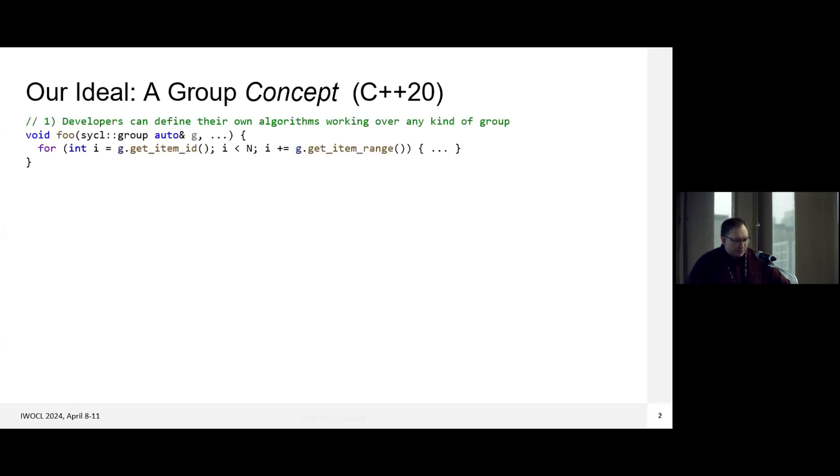So this concept could let us do several things. First, it can give developers a way to define algorithms that can work over any type of group. Today, if you wanted to do this, you'd have to either do some weird templating or specifically hard-code it for either the SYCL workgroup or subgroup types. So we'd like to be able to build this convention for device-side code, which improves programmer productivity.